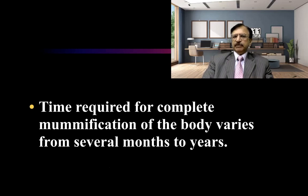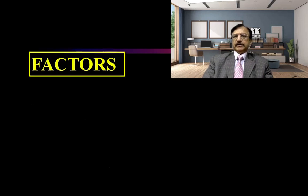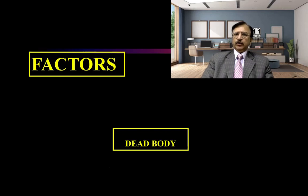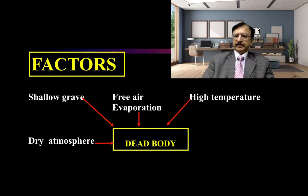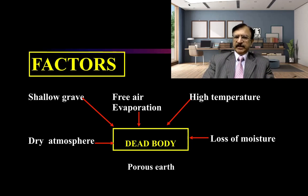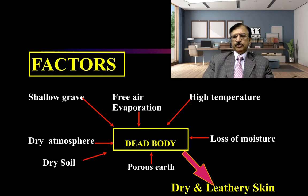The time required for complete mummification of the body varies from several months to years, and this condition then persists for several years once developed. Factors responsible for converting a dead body to a mummified state include: burial in a shallow grave, less moisture, high temperature, dry atmosphere, and porous earth. Dry sand, dry atmosphere, shallow graves, high temperature, and porous earth will favour the mummified state, causing tissues to become dry and leathery.